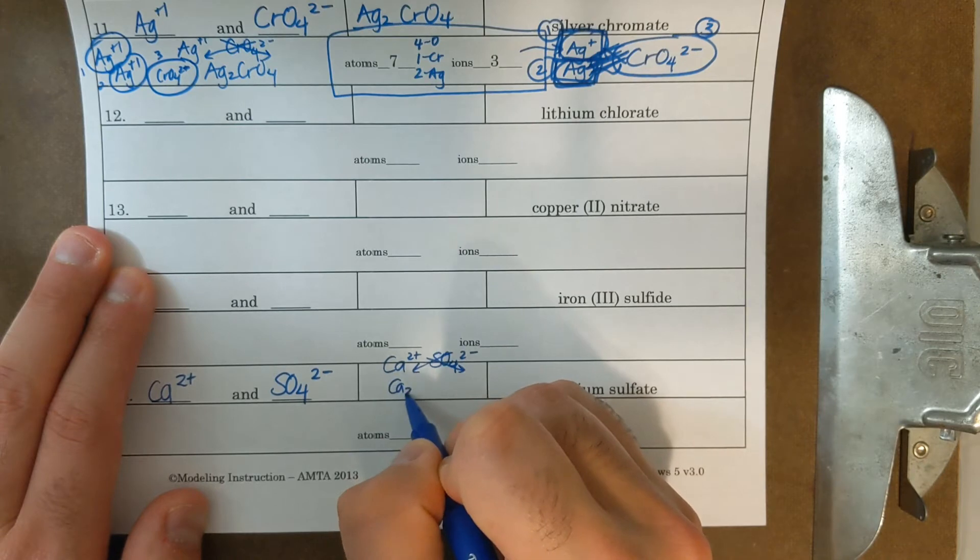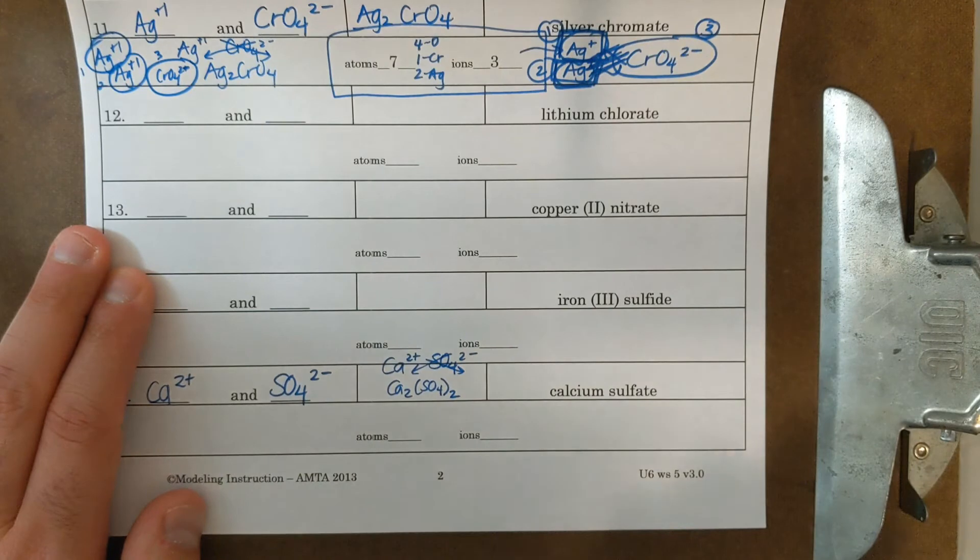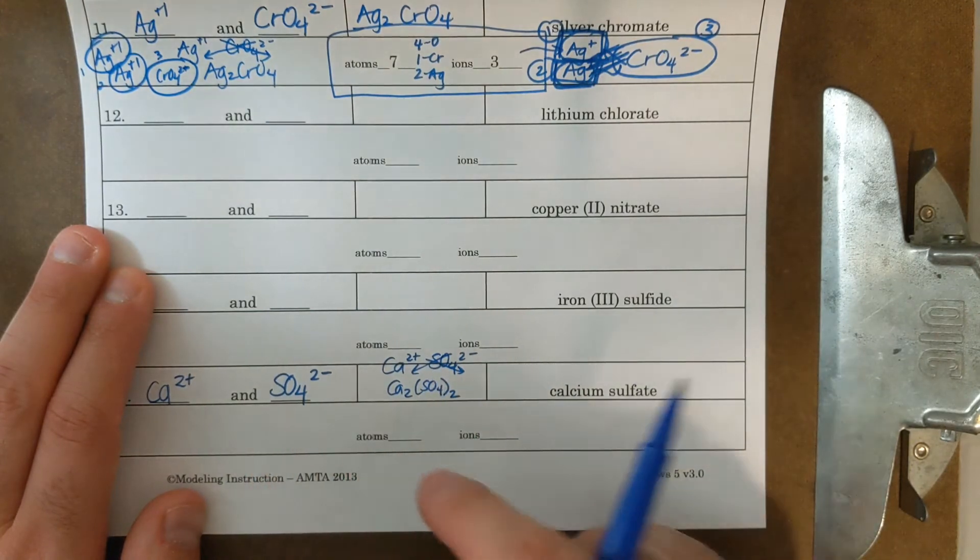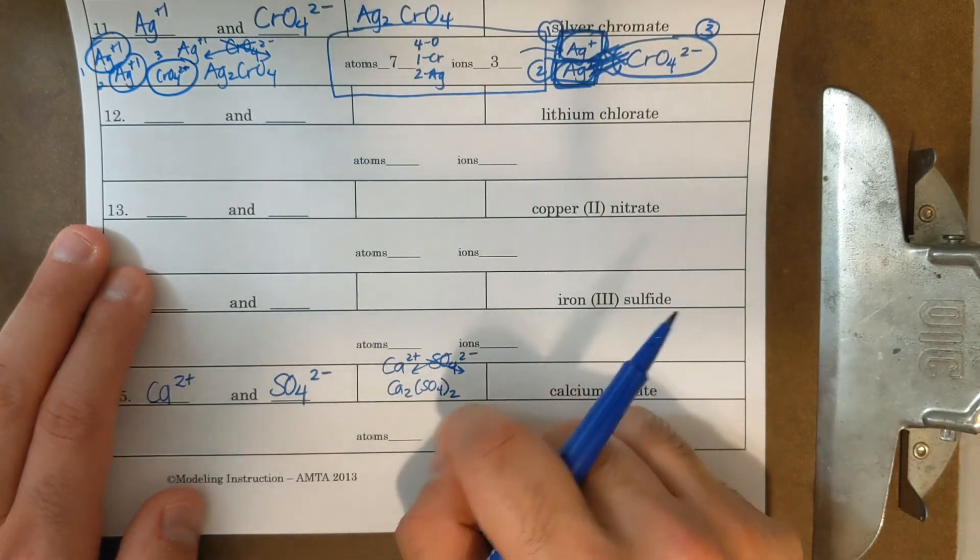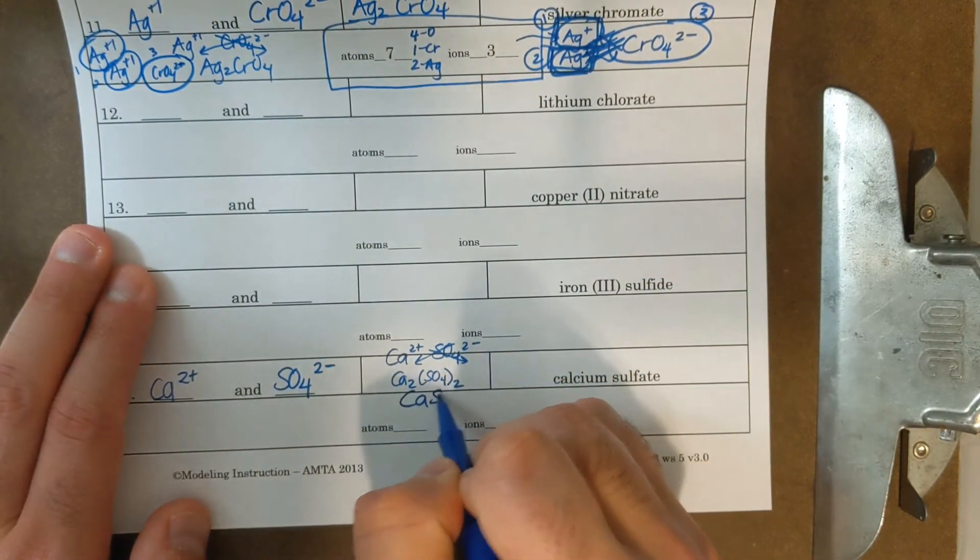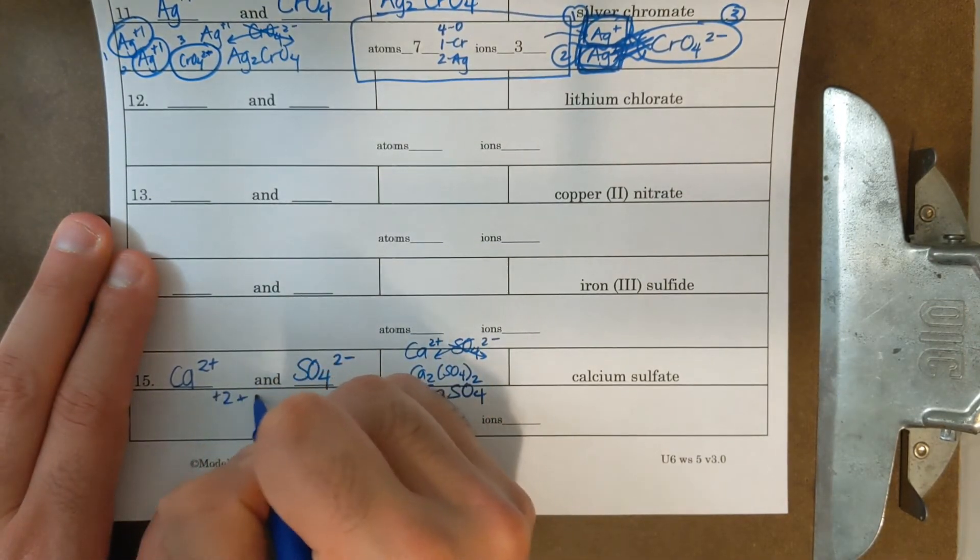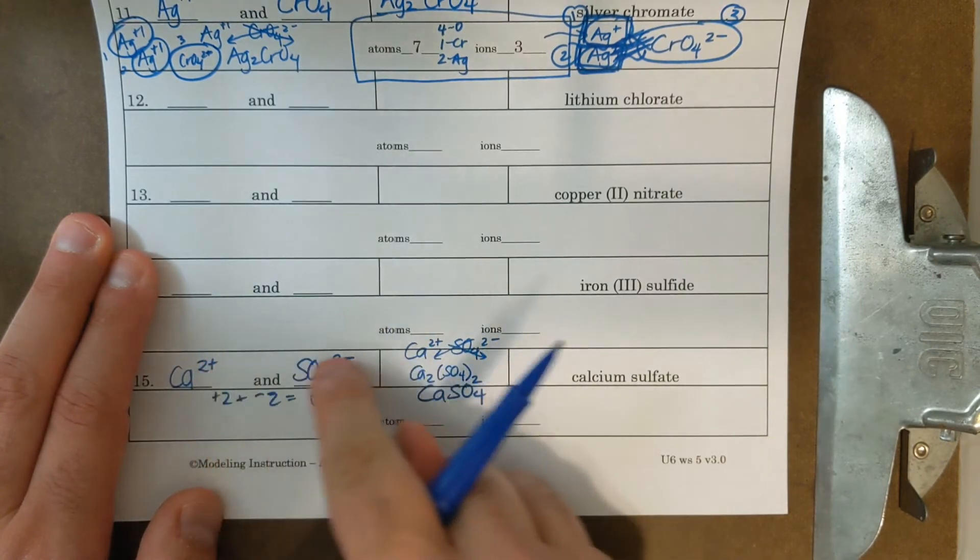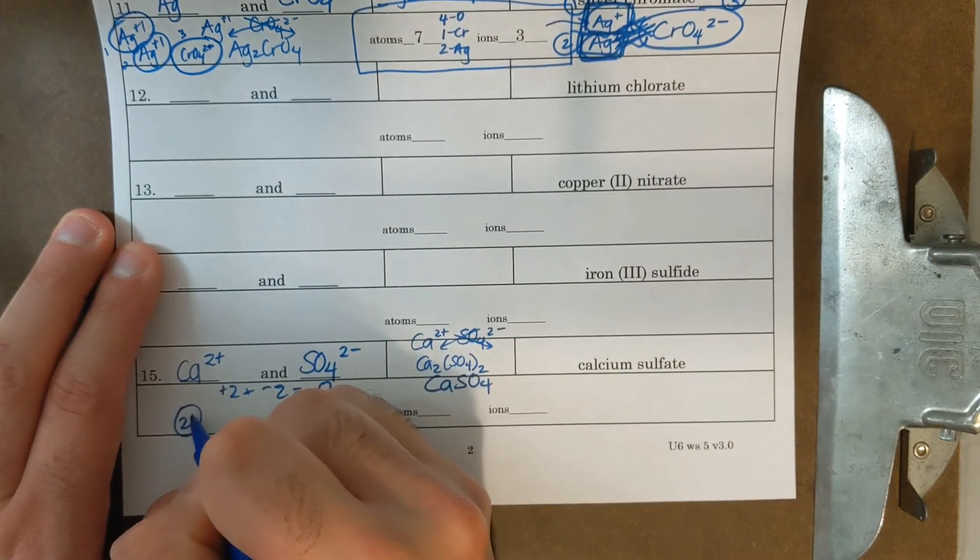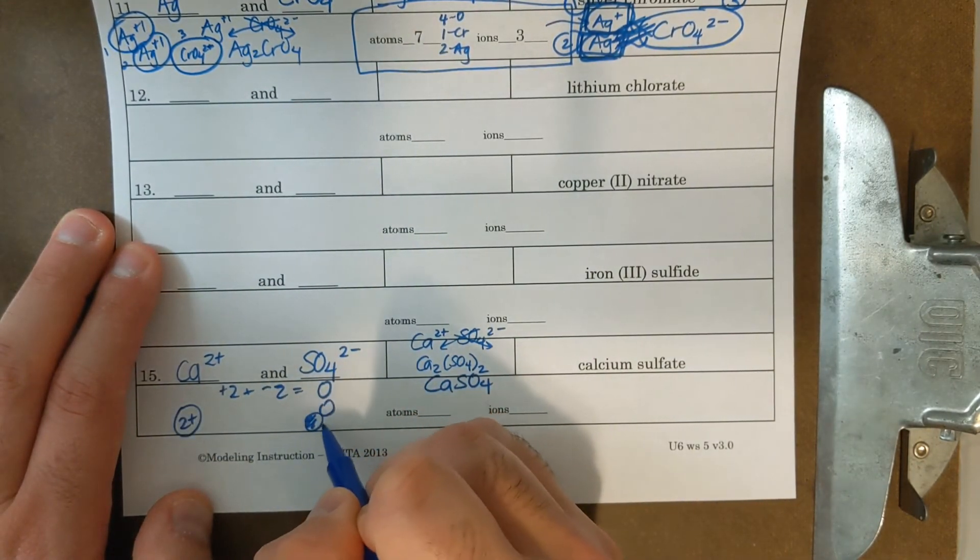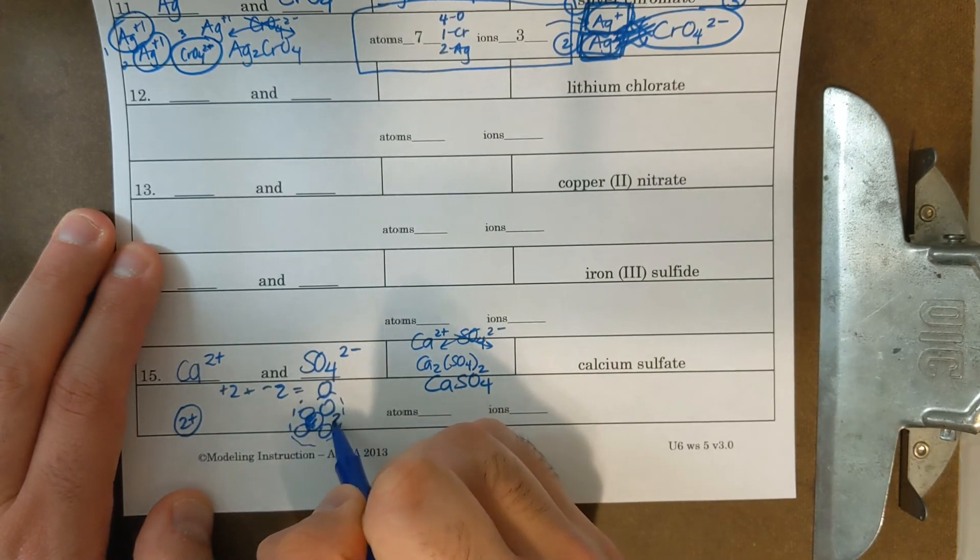If I were to do the crisscross method, I'd get CA two SO four two. But remember, I need to have the simplest formula, and both of these have two in them. So I could actually simplify this to just CA SO four. You could also note that plus two plus minus two is equal to zero. The sum of the charges needs to equal zero. So I only needed one of each. Here's a calcium two plus, and then I'll draw sulfate again like this. And I'll put a dotted line for two minus.